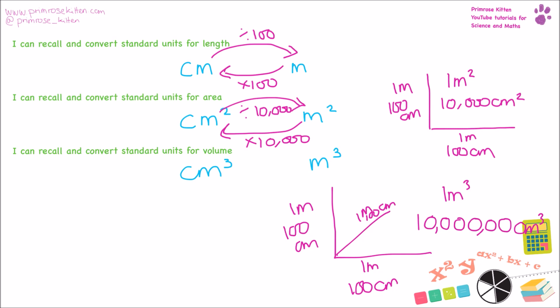Going from centimeters cubed into meters cubed, we need to divide by 10,000,000. Three, four, five, six. And going the other way, times. Two, three, four, five, six.